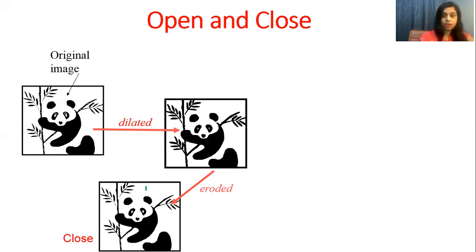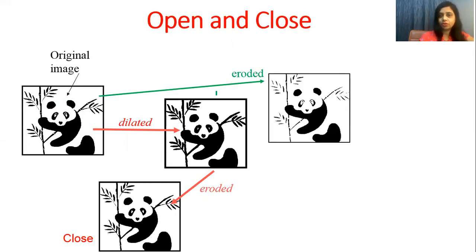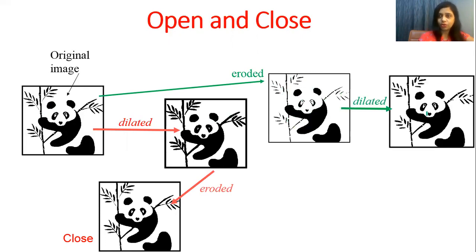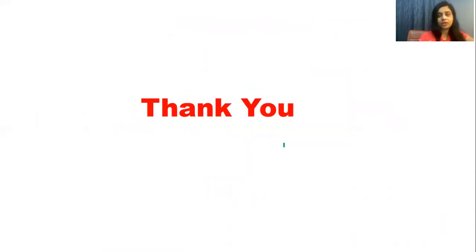For opening operation, we take the original image and erode it. After erosion we get a thinner image because erosion removes pixels from the boundaries. After erosion we do dilation and we get the final output. This is the difference between opening and closing operations. I hope you understood the video. Thank you for watching.